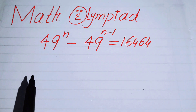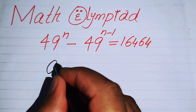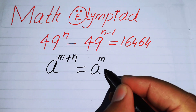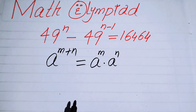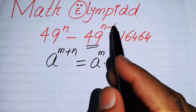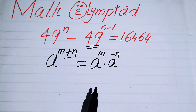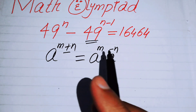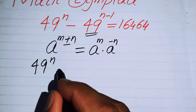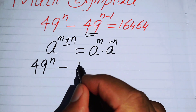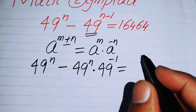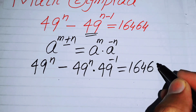The first thing we are going to do is use a nice exponential law. You know that a to the power of m plus n equals a to the power of m times a to the power of n. We apply this law to the term 49^(n-1), breaking its exponent to get 49^n minus 49^n times 49^(-1) equals 16464.